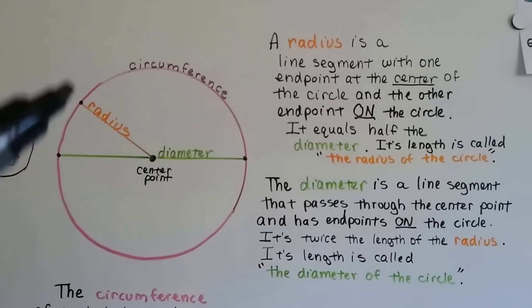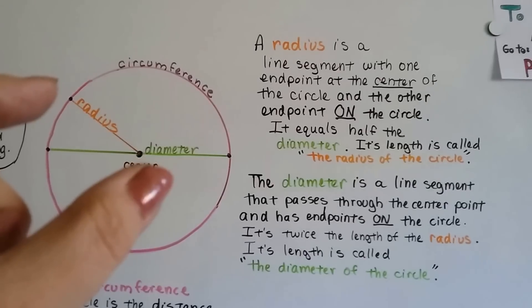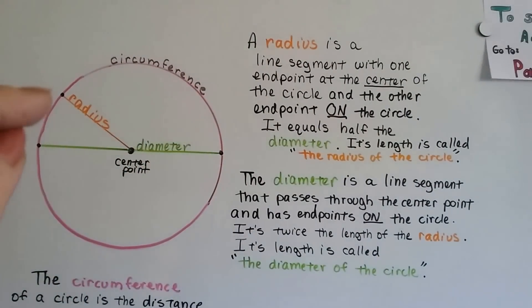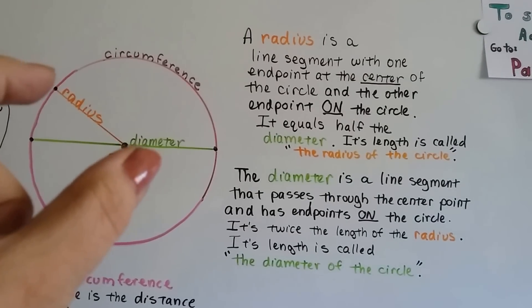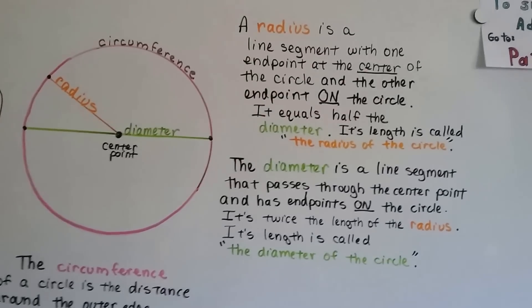Well, the radius, this orange guy right here, is a line segment with one endpoint at the center of the circle and the other endpoint on the circle. It equals half the diameter. Its length is called the radius of the circle.